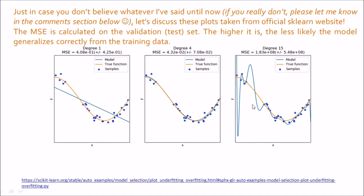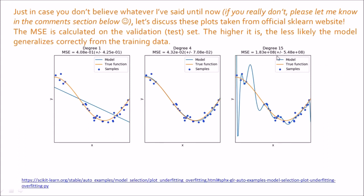For the degree-15 overfitting model, the mean squared error between the training data and model predictions is 1.8×10⁸ — a huge number. The higher the mean squared error, the less likely the model generalizes correctly from the training data. This is how we can keep a check on overfitting and underfitting.